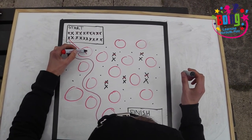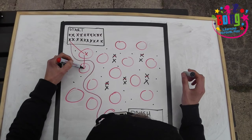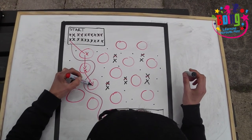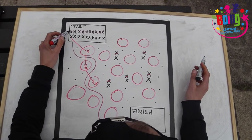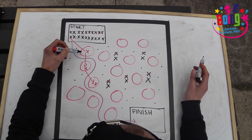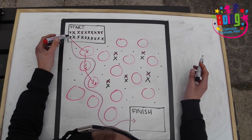The guides can only communicate with their partner when they are stood inside one of the hula hoops. However, if the blinded partner goes in the hula hoop, they must go back to the start and try again.